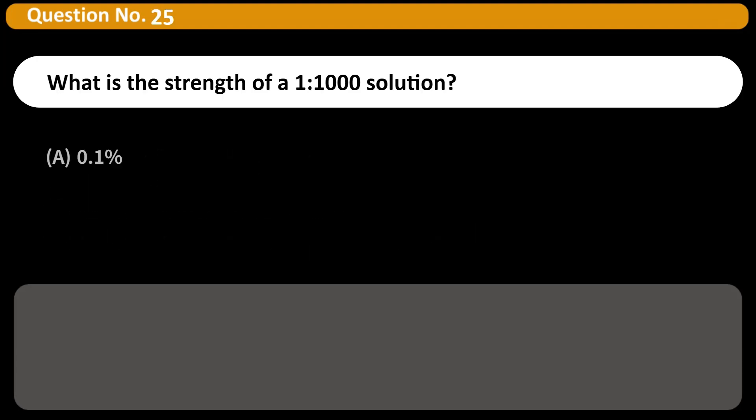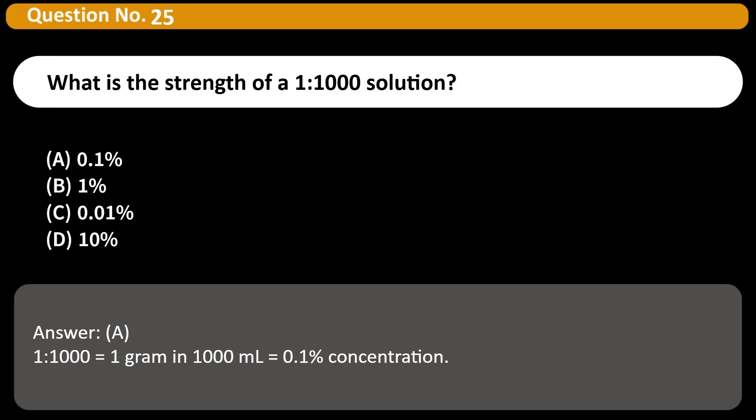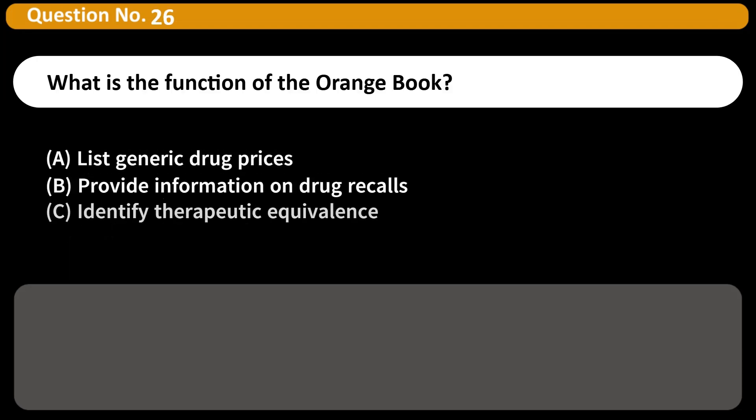What is the strength of a 1:1000 solution? A. 0.1%. B. 1%. C. 0.01%. D. 10%. Answer: A. 1 to 1000 equals 1 gram per 1000 mL, which equals 0.1% concentration.